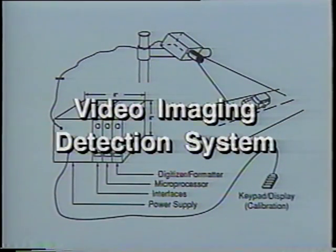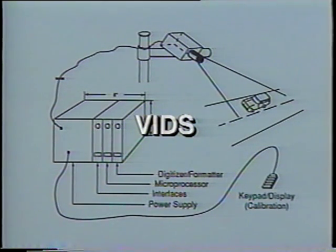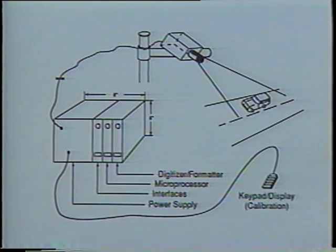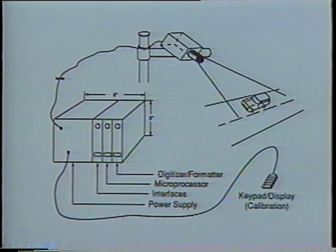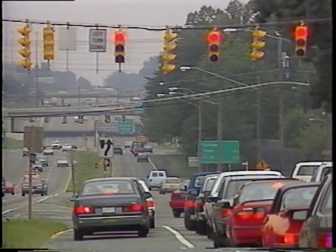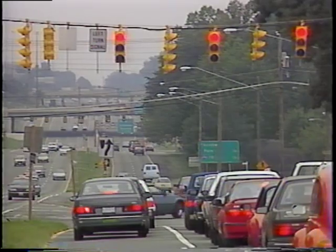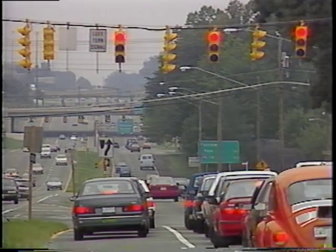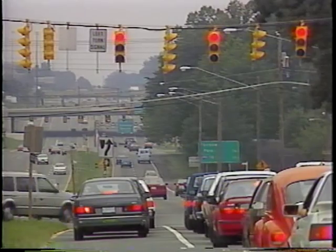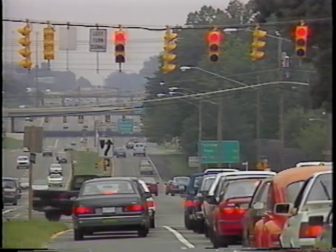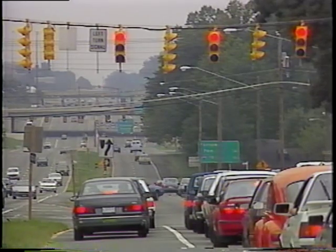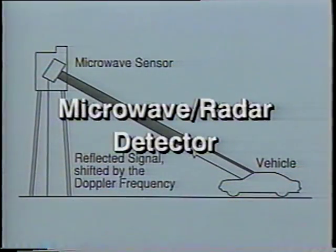Another promising emerging detector technology is the video detection system, called VIDS for short. It uses a single video camera with processing hardware and software to provide data similar to that of multiple loop detectors. VIDS can detect traffic at multiple spots within the camera's field of vision; detection lines across traffic lanes are inserted on screen using the keyboard. Every time a vehicle crosses a detection line, a detection signal is generated, and data is extracted on occupancy, volume, queue lengths, and speed.